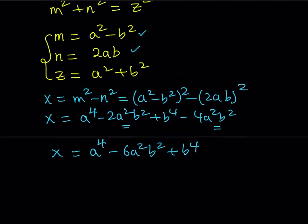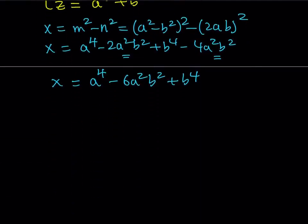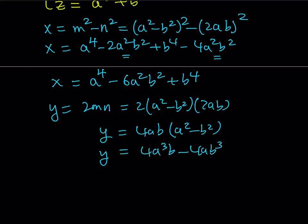Let's do the same for y. Remember, y is equal to 2mn. So y equals 2mn, where m equals a squared minus b squared and n equals 2ab. Putting these together gives 4ab times the quantity a squared minus b squared. Distributing gives y equals 4a cubed b minus 4ab cubed.